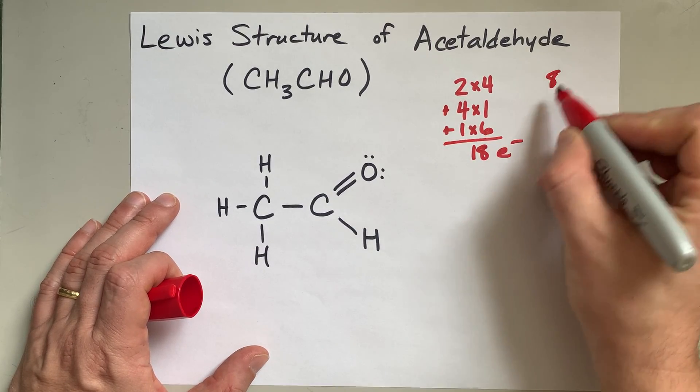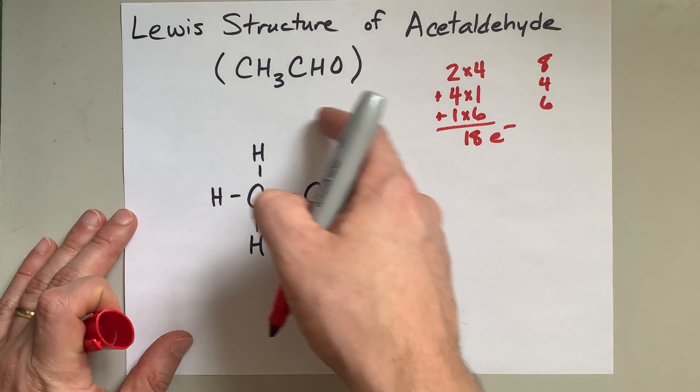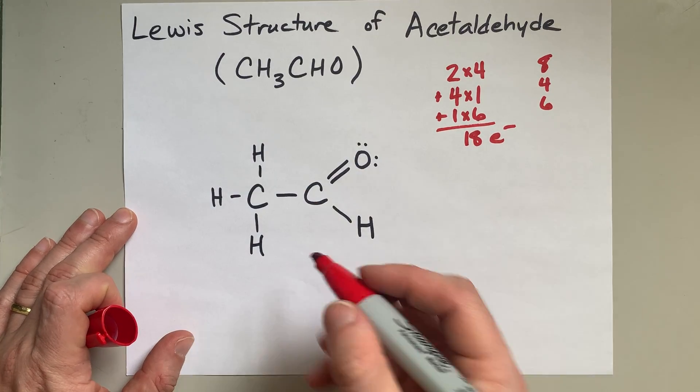Let me double check that. Eight and four and six is 18 electrons. Yeah, that's right.